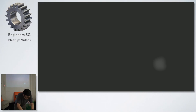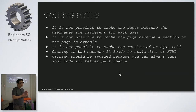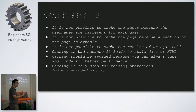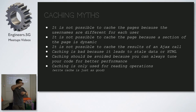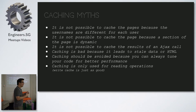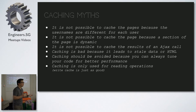'Caching is bad because it leads to stale data or HTML' — yes, unless you put in cache invalidation rules. 'Caching should be avoided because you can always tune your code for better performance' — if something is static HTML for millions of users, use a high I/O solution like Memcache or Varnish; don't render the page over and over. Use the best tool for the job. The last myth: 'Caching is only good for read operations.' Not true — you can use a high-speed data store for fast writes too. Facebook likes are stored in memory first, never written directly to DB; a periodic routine collects them and writes to disk. If you need high-speed writes, Redis and DynamoDB are fast because they use SSDs and are non-blocking.